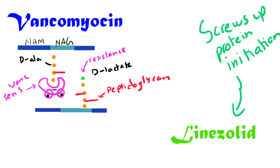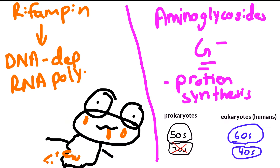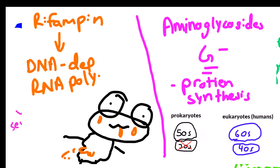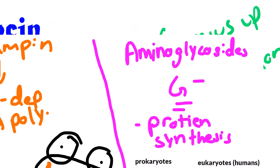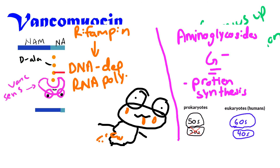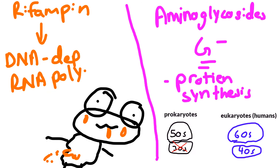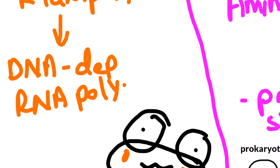For treatment, use a combination of vancomycin, or in the case of Strep viridans you can use penicillin G with rifampin or aminoglycosides like gentamicin, tobramycin, or amikacin initially while waiting for sensitivities. Rifampin inhibits DNA-dependent RNA polymerase — specifically the bacterial RNA polymerase.